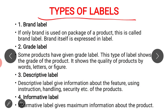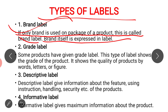Labeling has different types. Our first type of label is the brand label. As the name indicates, such labels are exclusively meant for popularizing the brand name of the product. For example, soaps like Lux, Hamam, Rexona, and Godrej have the brand name carved on them. Similarly, cosmetic manufacturers also engrave their particular brand name on their products. So if only the brand name is used on the package of a product, it is termed a brand label.